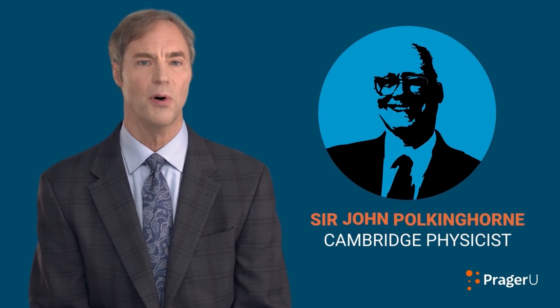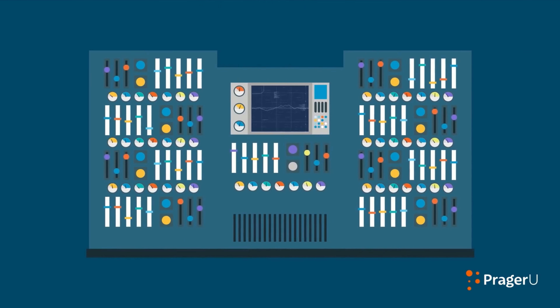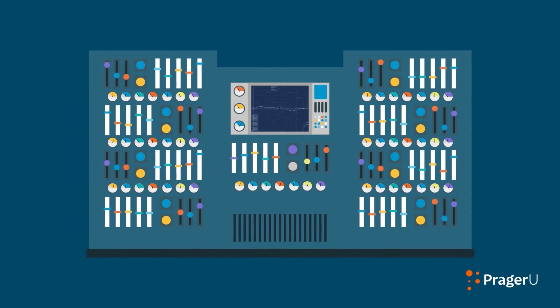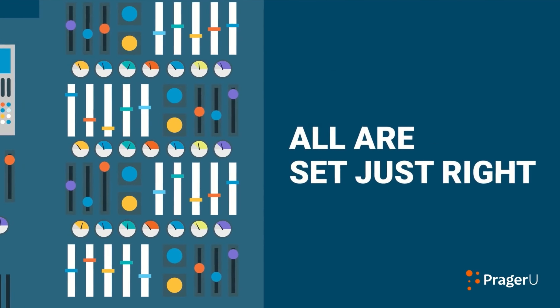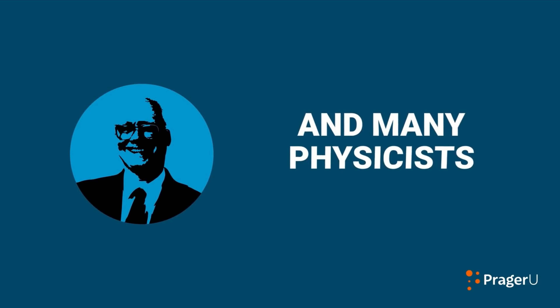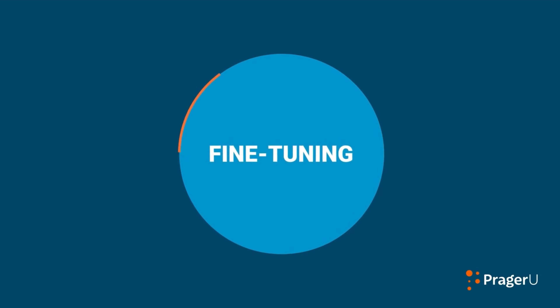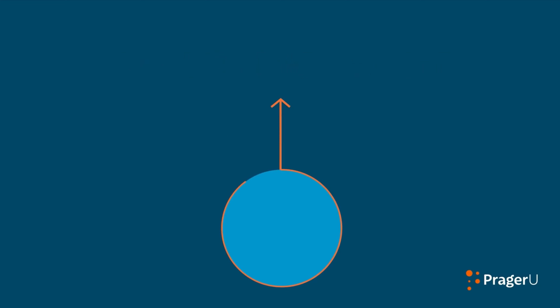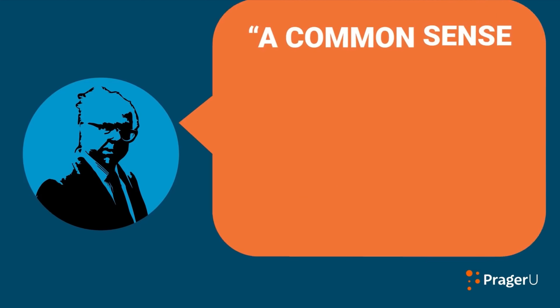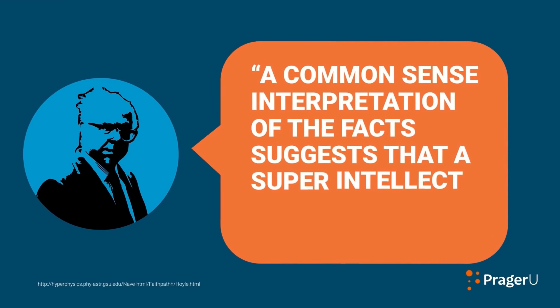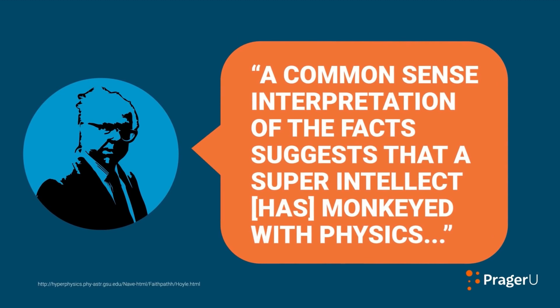To illustrate this idea, the late Cambridge physicist Sir John Polkinghorne imagined a universe-creating machine with numerous dials, each representing some critical parameter. The various dials each have an almost infinite range of settings, yet all are set just right. Not surprisingly, Polkinghorne and many physicists have concluded that the improbable cosmic fine-tuning of our actual universe points to a cosmic fine-tuner. As legendary Cambridge astrophysicist Sir Fred Hoyle argued, a common-sense interpretation of the facts suggests that a super-intellect has monkeyed with physics to make life possible.